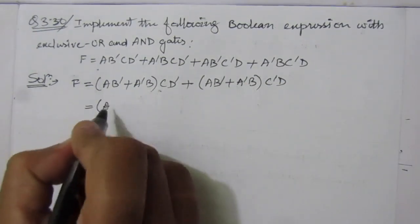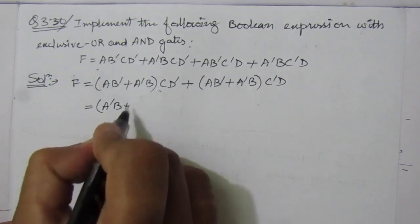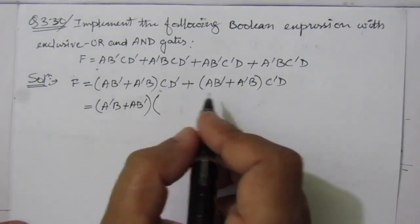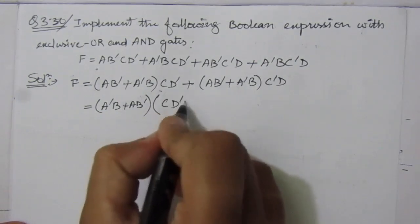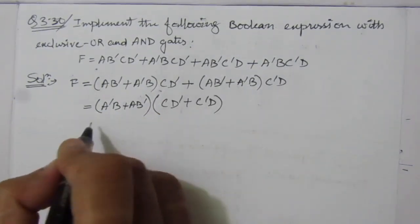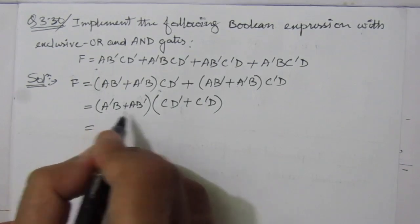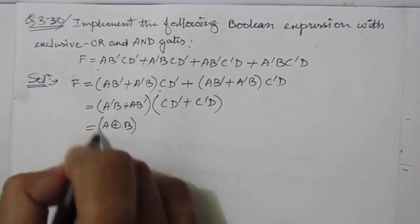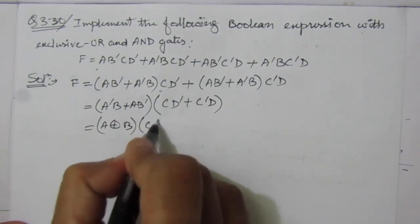A bar B plus AB bar. AB bar whole into, if we take common, we will get CD bar plus C bar D. So these are nothing but XOR operations. We can write it as A XOR B whole into C XOR D.